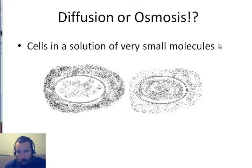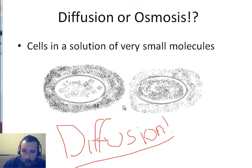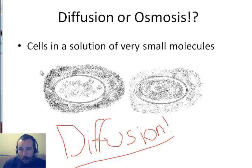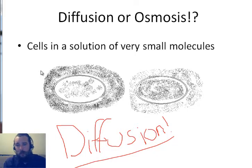Alright, this scenario: cell is in a solution of very small molecules — what's going to happen, diffusion or osmosis? That's right, it's diffusion because these molecules are very small. Let's draw some arrows — which way are the molecules going to go, into the cell or out of the cell? They're going to go into the cell to even out that concentration. High to low, high to low, that's the way the molecules go.